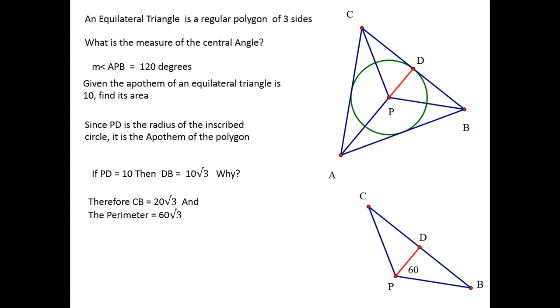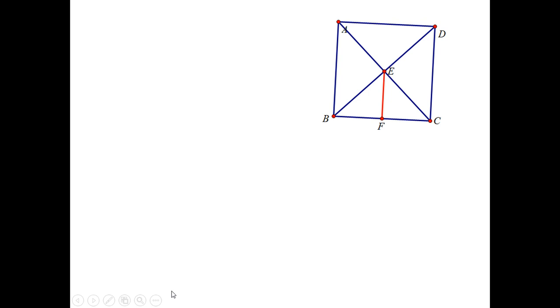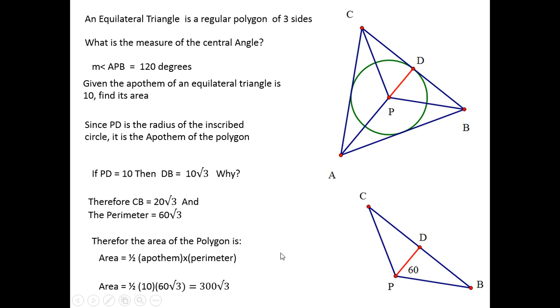The area of the polygon, again, one-half the apothem times the perimeter. That's one-half of 10 times 60 root 3. Take one-half of either 10 or one-half of 60 root 3, not one-half of both. So you have 300 root 3, as the area of this equilateral triangle.